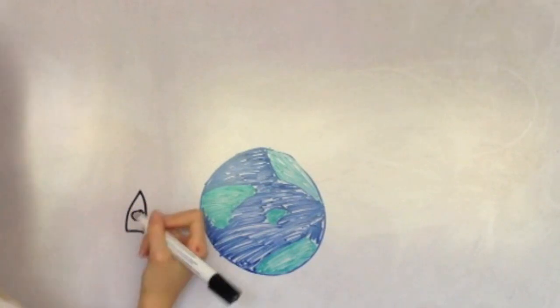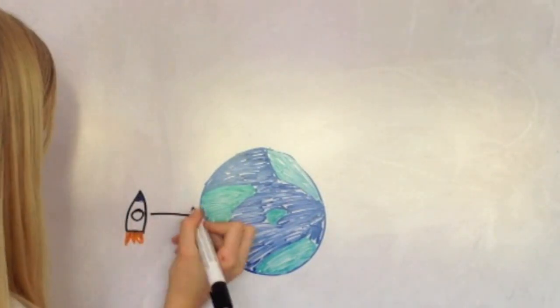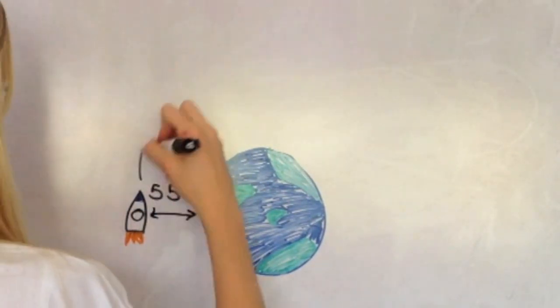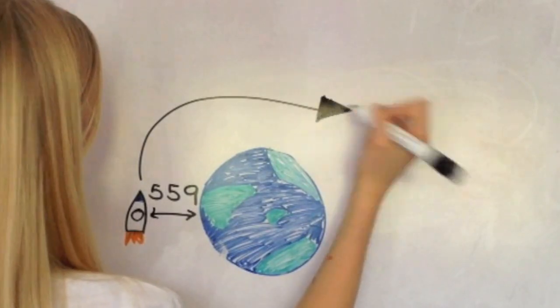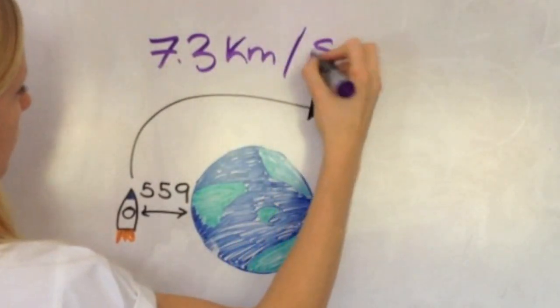Juno was launched in Florida and flew within 559 kilometers of Earth. It used Earth's gravity to act as a slingshot while boosting Juno's speed to 7.3 kilometers per second.